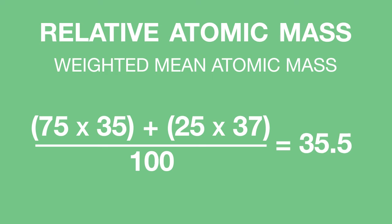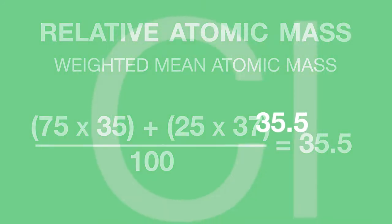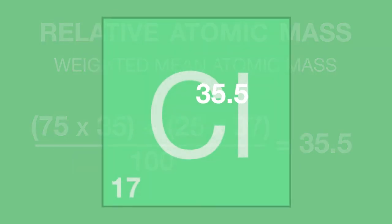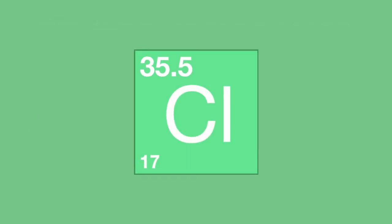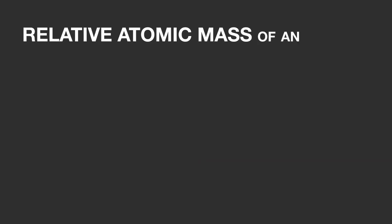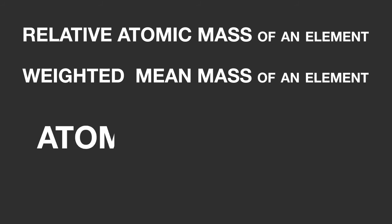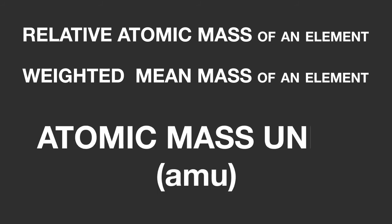This explains why chlorine is listed as having a relative atomic mass of 35.5 in the periodic table. The relative atomic mass of an element is the weighted mean mass of an element, and it is written in atomic mass units.